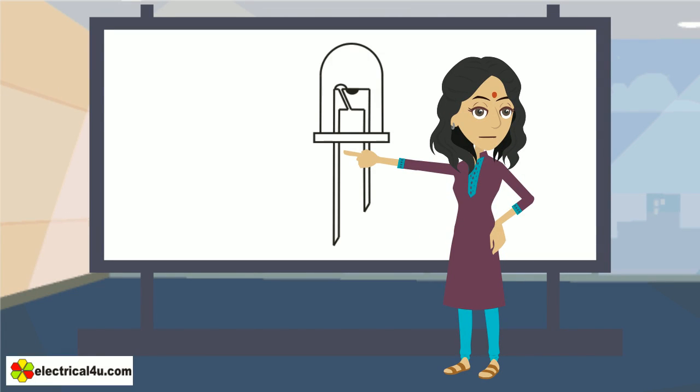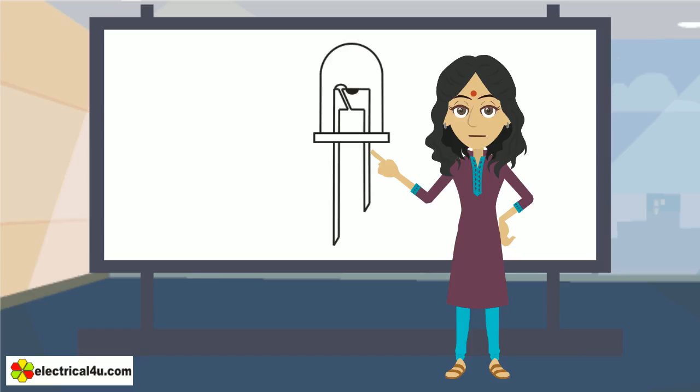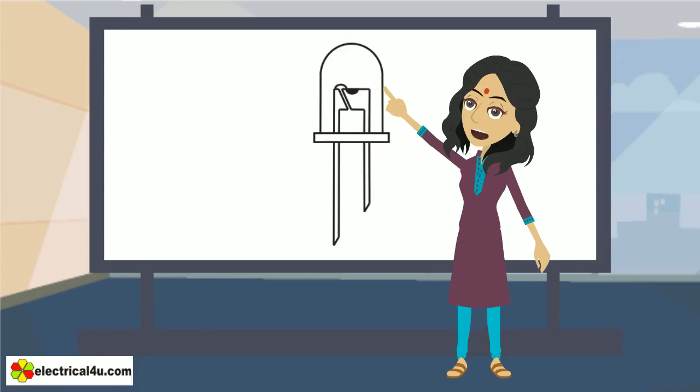This is anode or positive terminal. This is cathode or negative terminal. The PN junction is surrounded by a transparent hard plastic epoxy resin hemispherical shaped shell to protect the diode from external shock. This is a transparent cover of the diode.